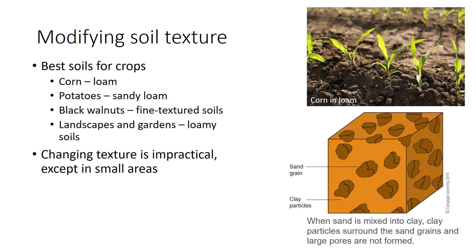Growers and engineers use soils for many purposes, and for each purpose a different soil texture may be best. For example, corn tends to be most productive on a loam, potatoes on a sandy loam, and black walnuts on fine-textured soils. Loamy soils are easiest to use for landscapes and gardens.